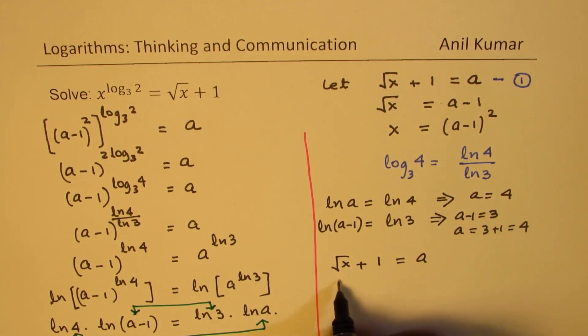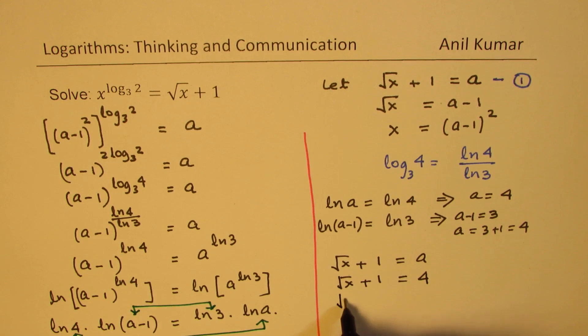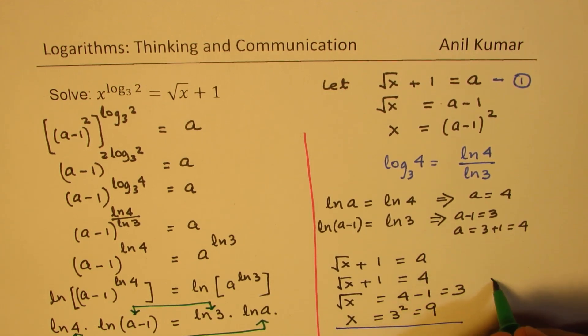So we can write square root of x plus 1 equals 4, which gives you square root of x equals 4 minus 1, which is 3. Squaring both sides we get x equals 3 squared, which is 9. That is how we get the solution: x equals 9.